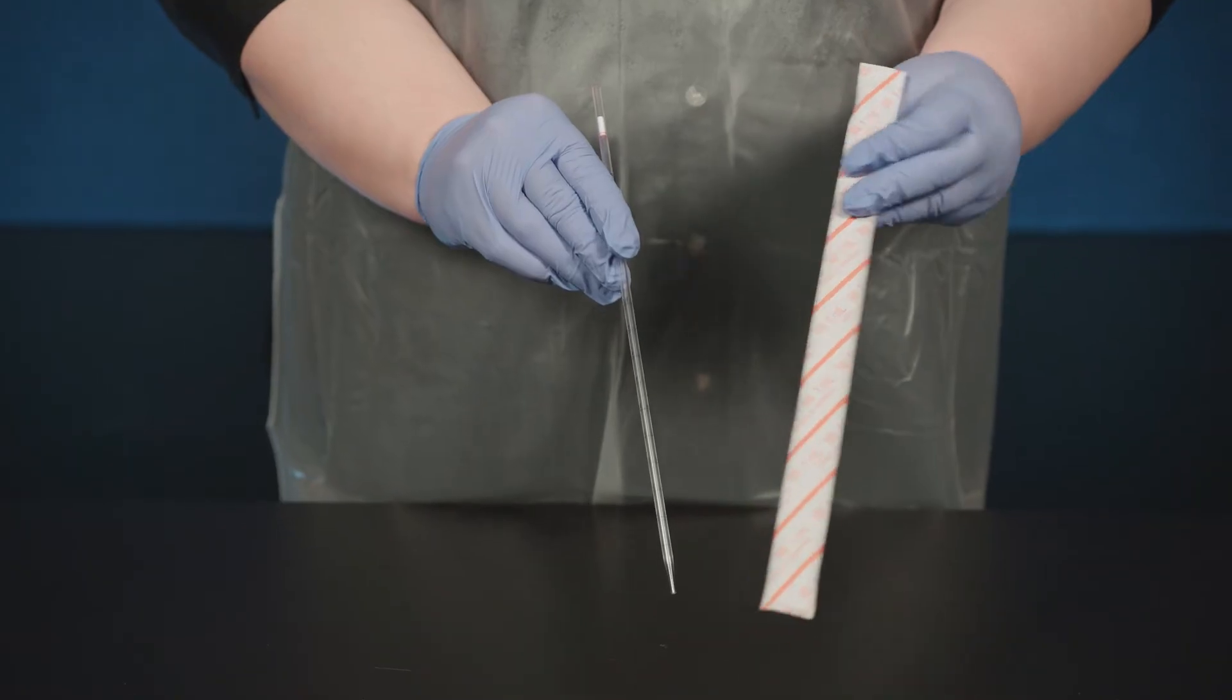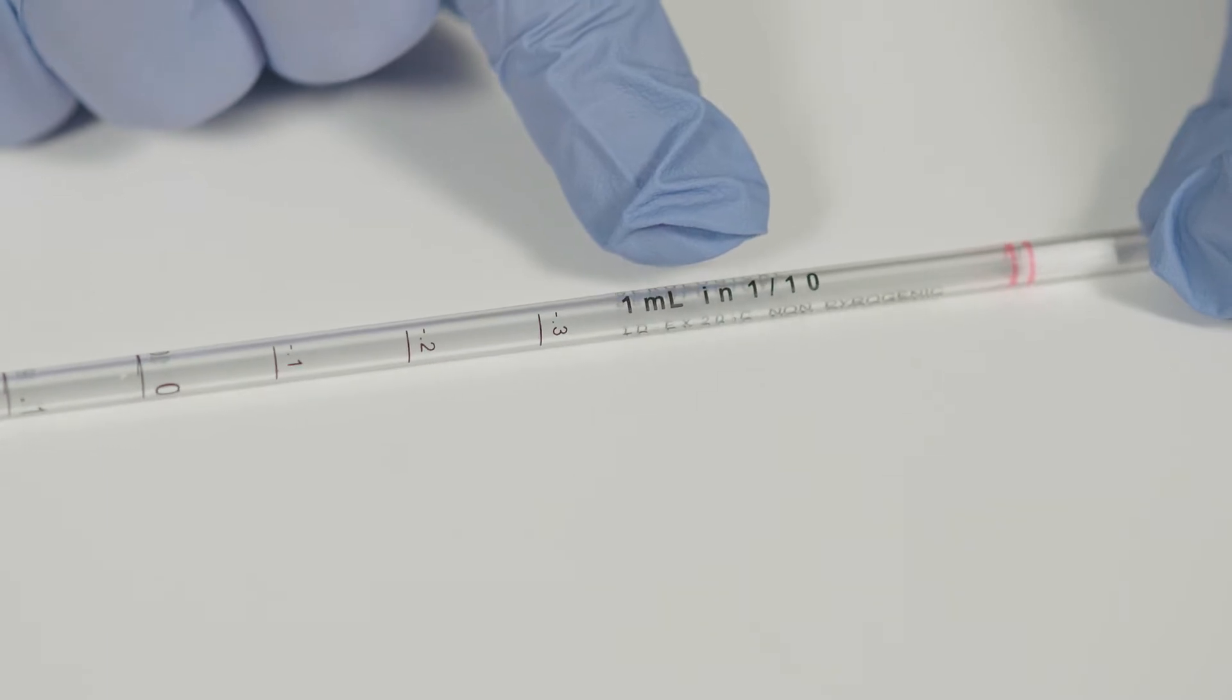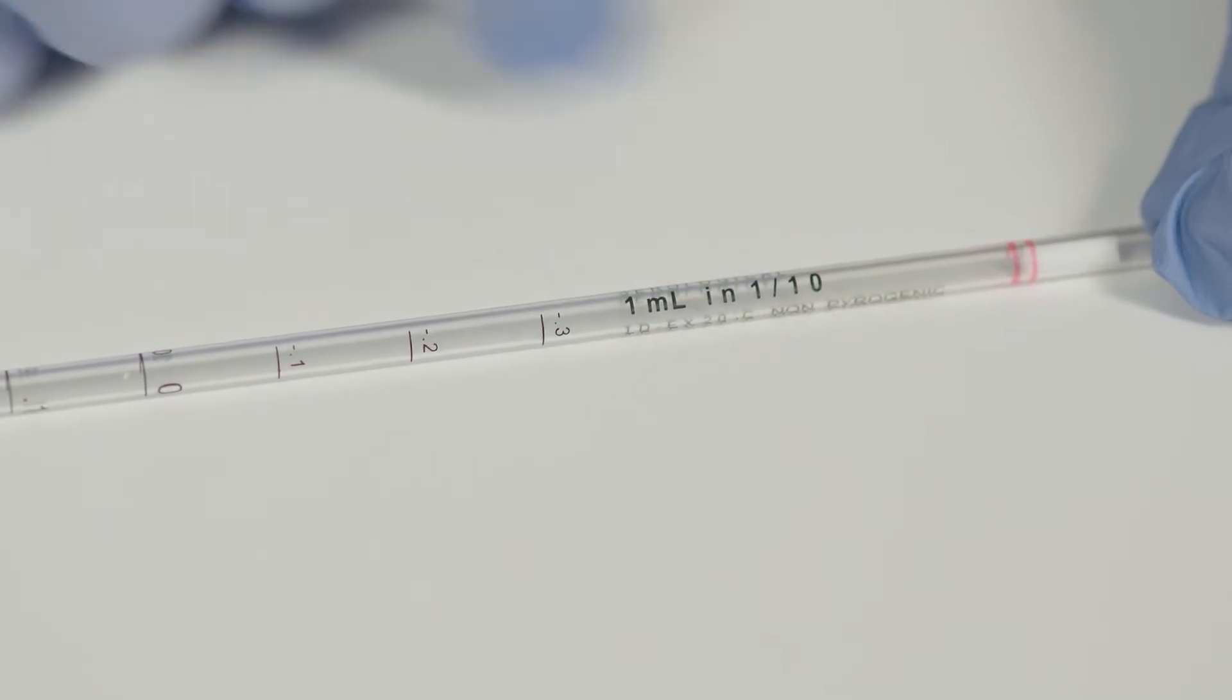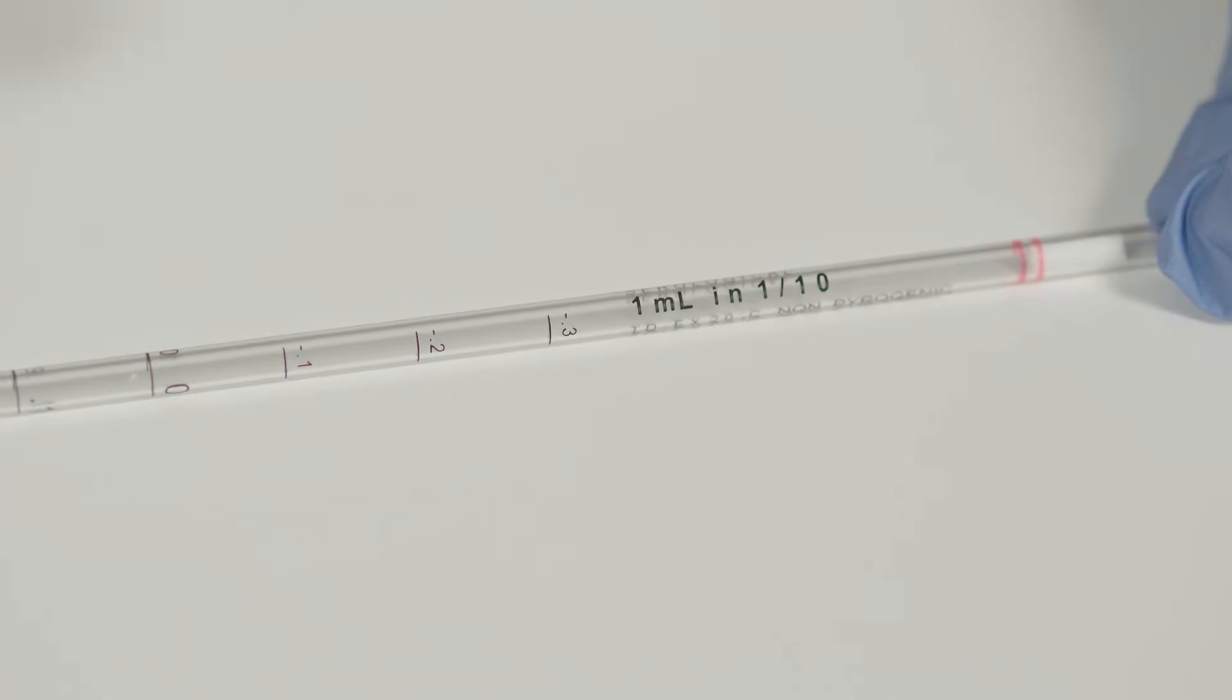Let's take a look at the information stamped on the side of this pipette. Notice it says this pipette measures one milliliter. That is the maximum you can measure or accurately transfer with this pipette in tenths of a milliliter.